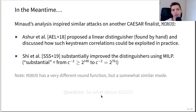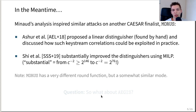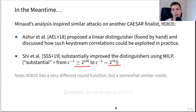In 2018, a team of researchers proposed a linear distinguisher found by hand and discussed how these exploits could be used in practice. About a year later, another team used a mixed-integer linear programming model to substantially improve the power of the linear distinguisher — improving estimated complexity from 2^{146} to 2^{76}. While Morus has a quite different round function, it has a somewhat similar mode to Aegis, which begs the question: can we apply similar ideas to the Aegis ciphers?